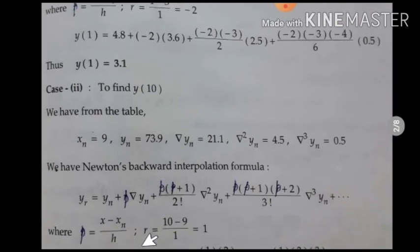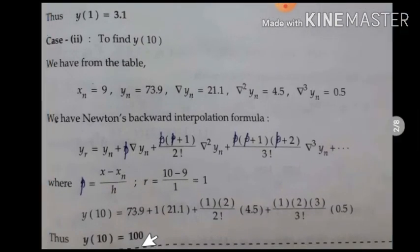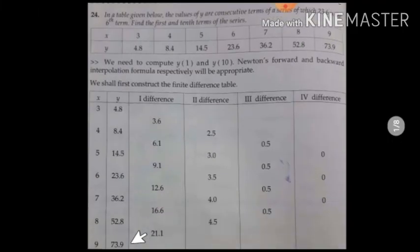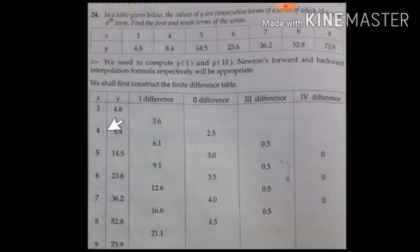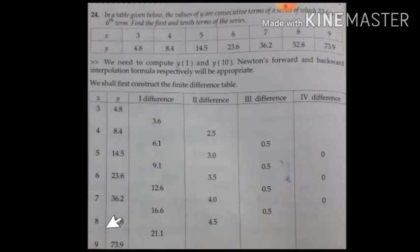Substitute the values, do the simplification, and you get the y value at x = 10 is 100. One important condition: Newton's forward and backward interpolation formulas are applied only when the x values are equally spaced — the difference between consecutive x values must be the same. For example, 4 minus 3 = 1, 5 minus 4 = 1, so the spacing h is constant. For such equidistant x values, we apply Newton's forward and backward interpolation formulas.